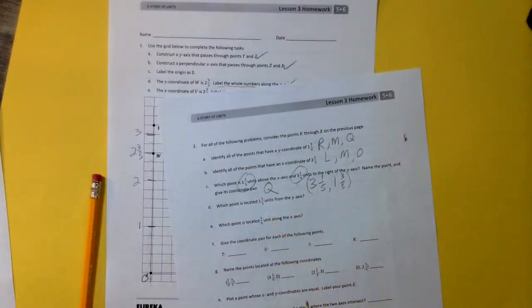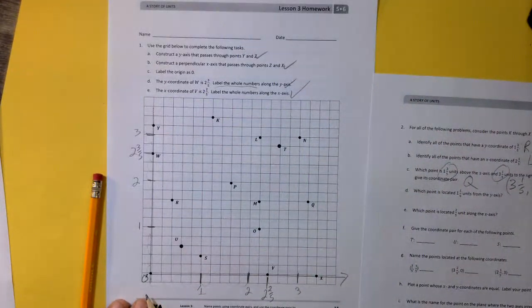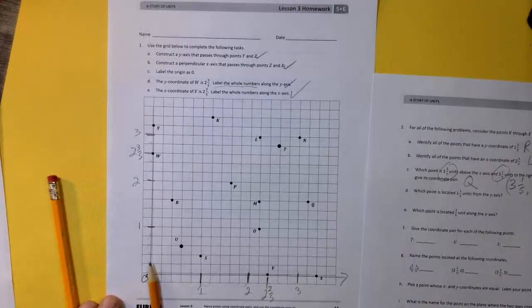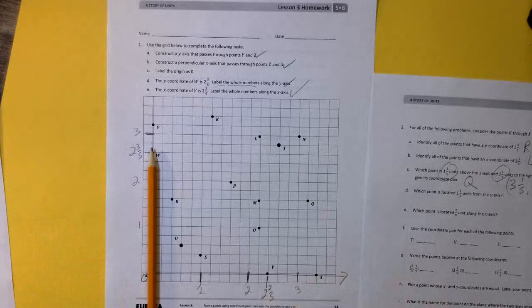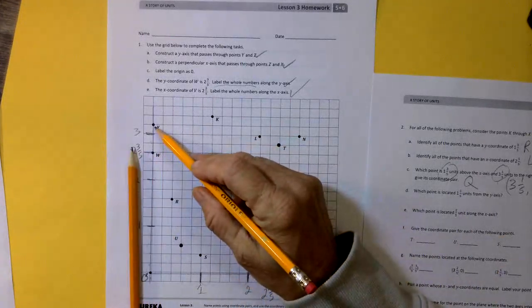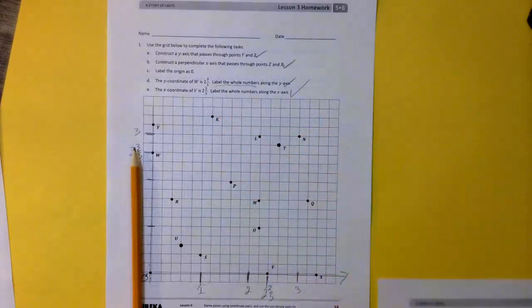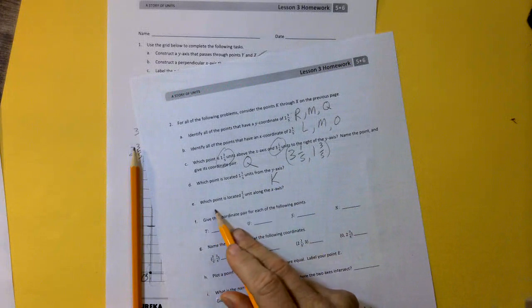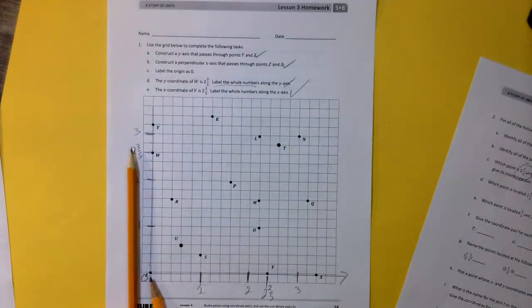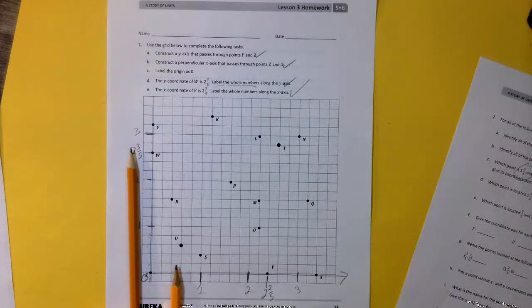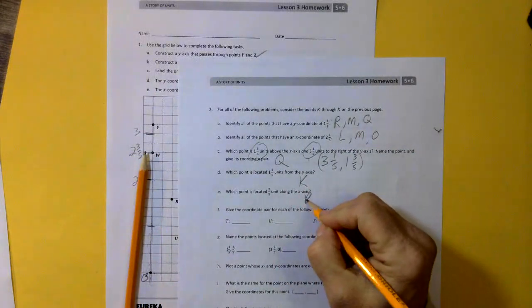Which point is located at 1 and 1 fifth? So we're going to go over which point is located 1 and 1 fifth from the y-axis. So here's the y-axis. It's as if you said to yourself, oh, I'm going to throw a ball 1 and 1 fifths away. Well, we're going to go 1 and 1 fifth. And we can see the only thing here is K. Which point is located 2 fifths along the x-axis? So we're going to move 1 fifths, 2 fifths, and we can see that that is R. Okay?